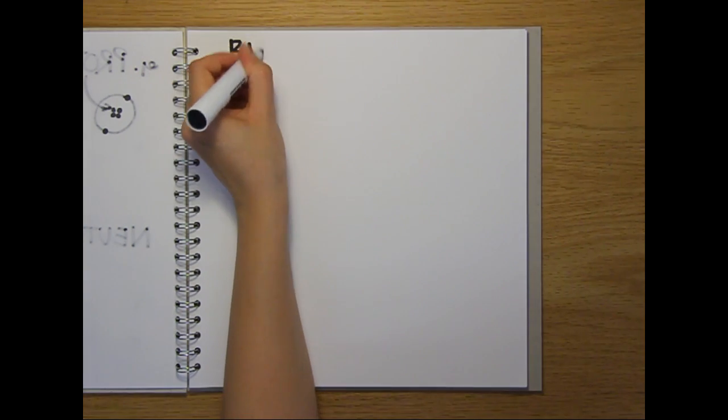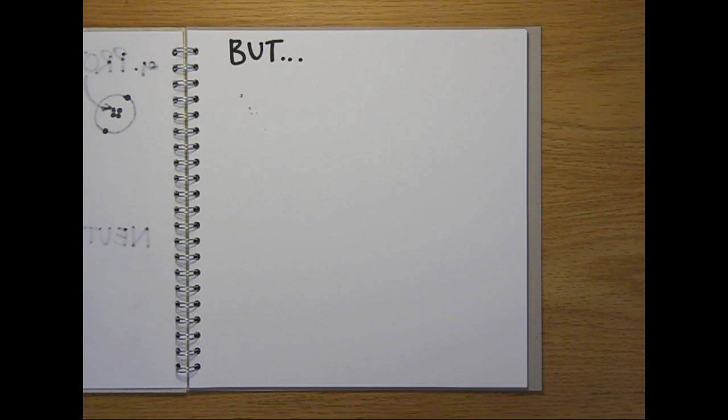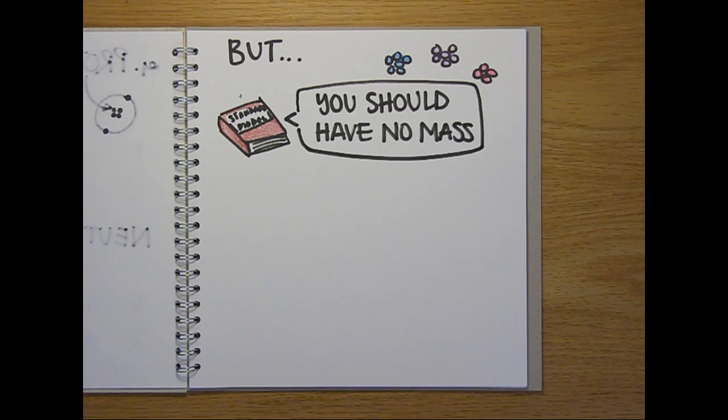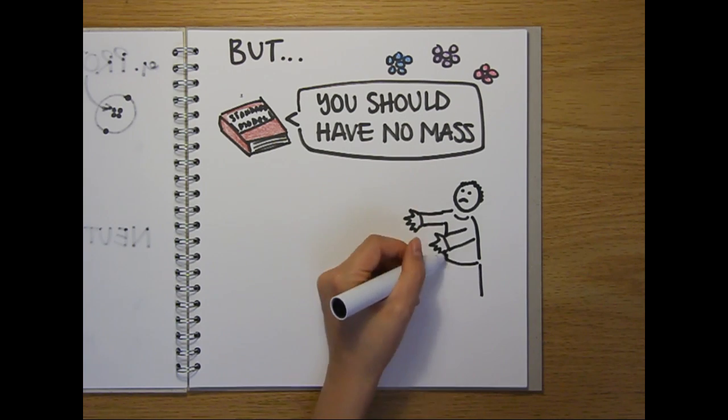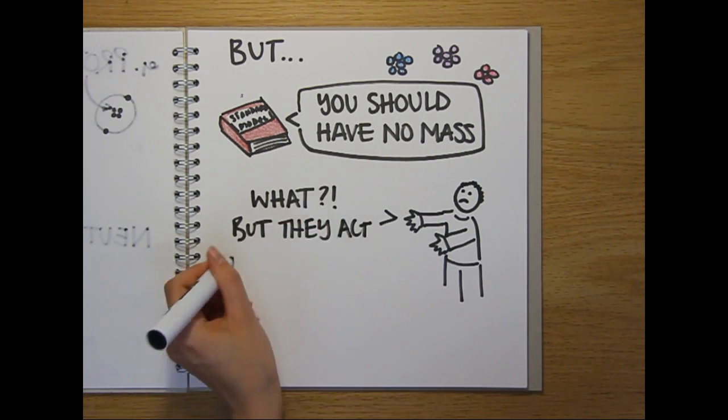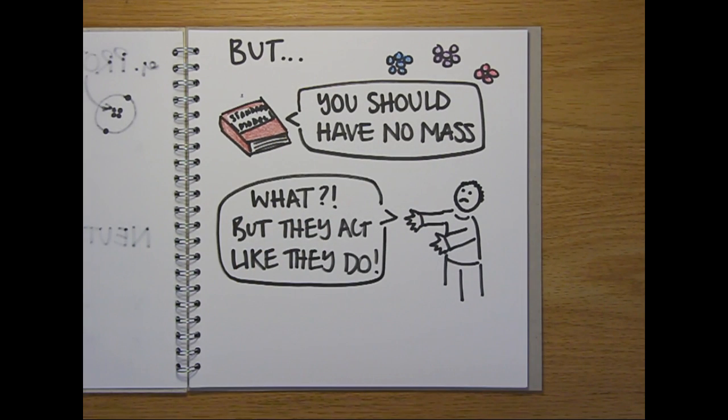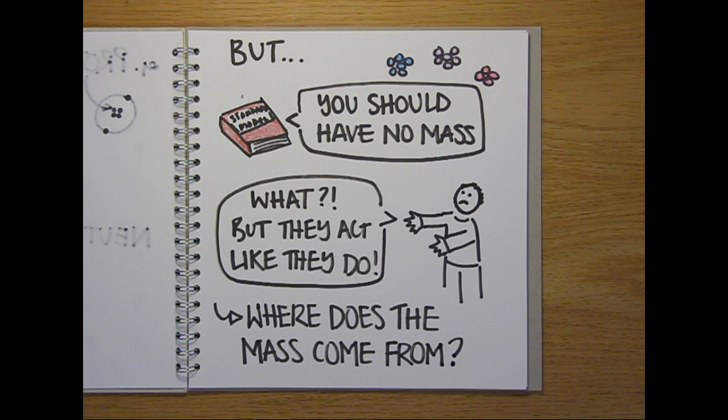But there is a problem with this standard model. It requires that the fundamental particles themselves have no mass. But the way that they behave and interact suggests that they do, otherwise they'd just whiz about in space on their own and not clump together to form matter. So the question is, where does this apparent mass come from?